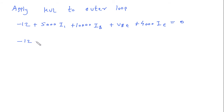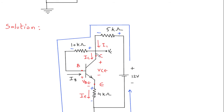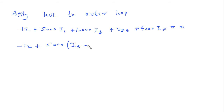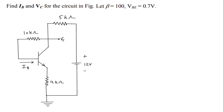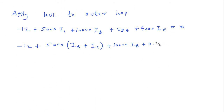This gives us: −12 + 5000·I1 + 10,000·IB + VBE + 4000·I1 = 0. Now, by KCL, the entering current I1 equals the leaving currents, so I1 = IB + IC. Substituting VBE = 0.7V, and replacing I1 with IB + IC throughout the equation.